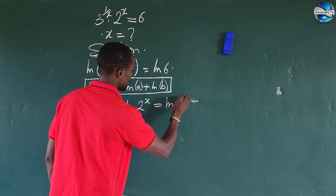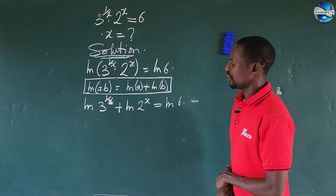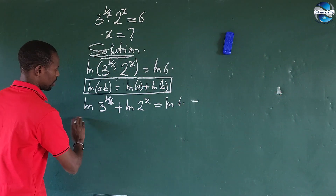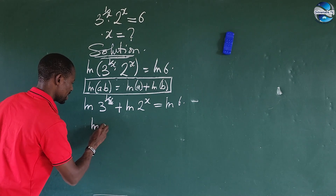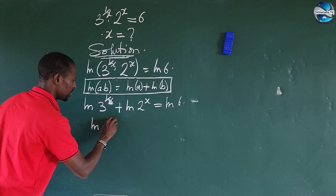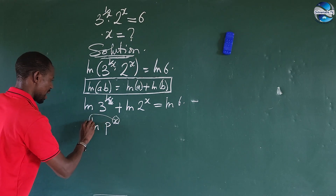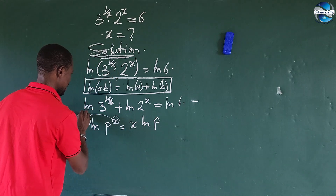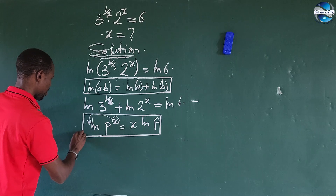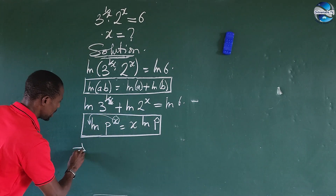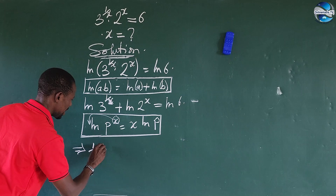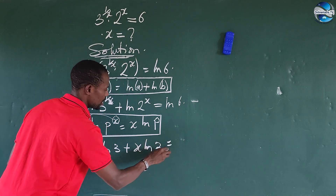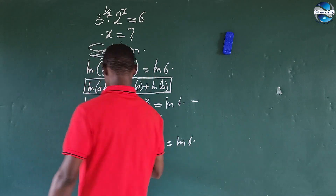Now we apply the exponent law of logarithms, which says that ln of p to the power of x equals x times ln(p). Applying this law to all terms gives us: one over x times ln(3), plus x times ln(2), equals ln(6).